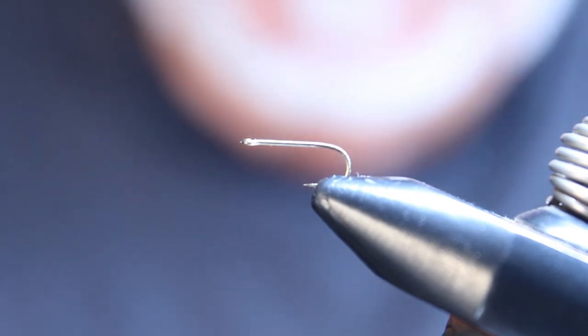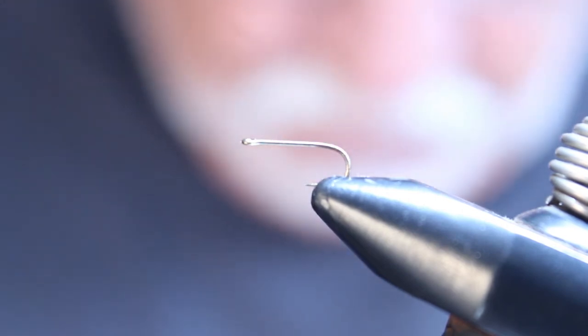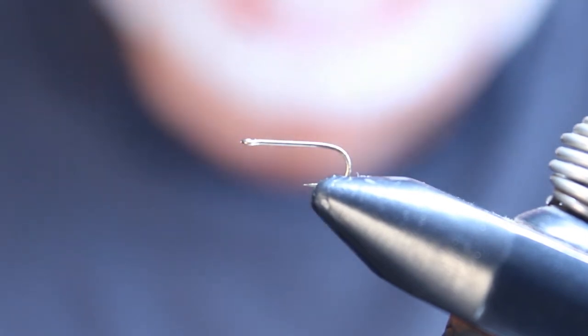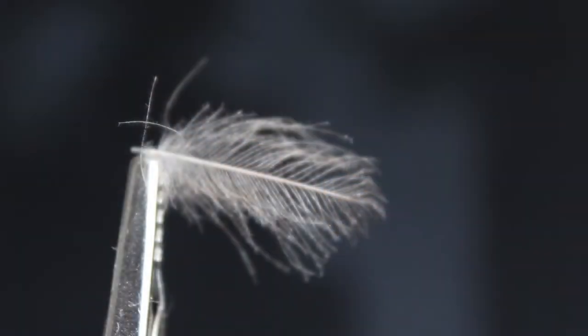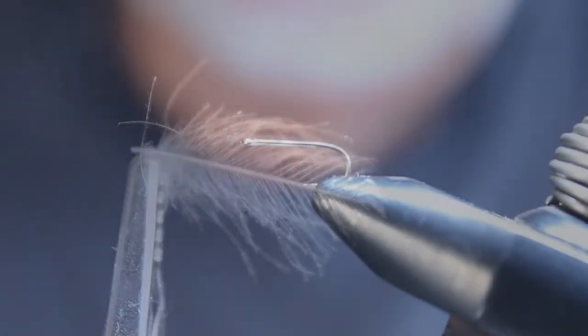Okay, next one we're going to be tying is going to be a Baetis imitation, and it's tied with CDC as the wings. CDC is a very good springtime and autumn pattern to use on a lot of tailwater fisheries.